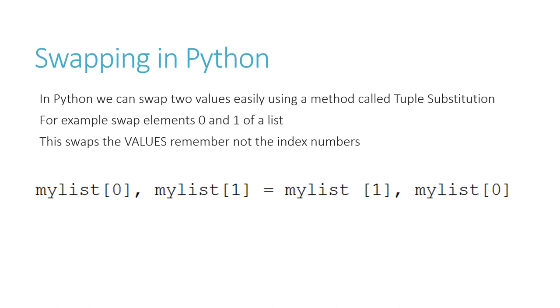We'll look at other programming languages later, but in Python there's a very easy way to swap two values. It's called tuple substitution. Basically, the first values are treated as a tuple and then overwritten with a second tuple.